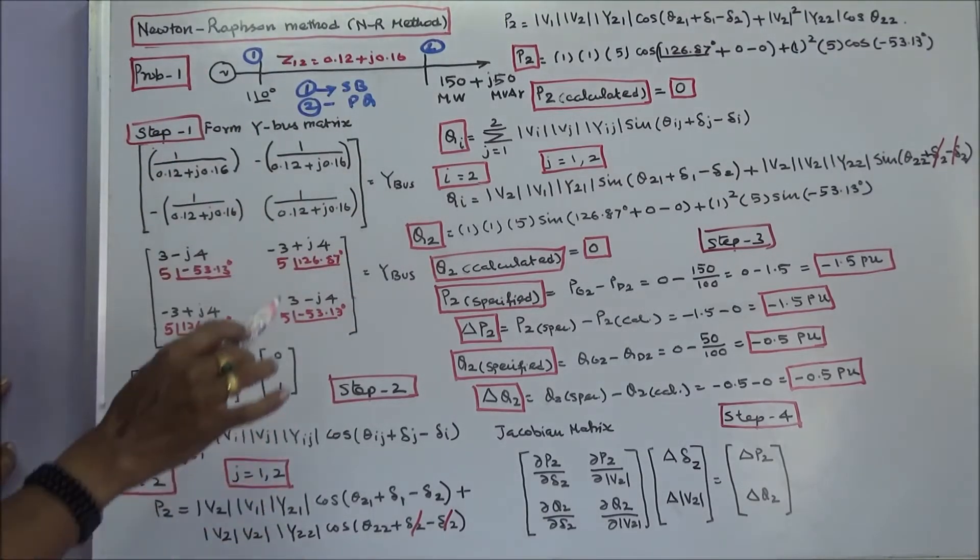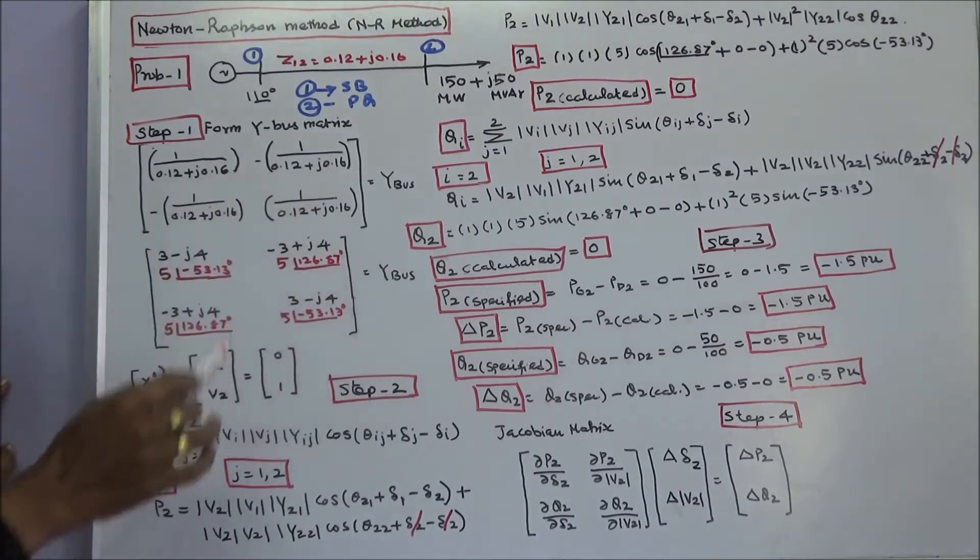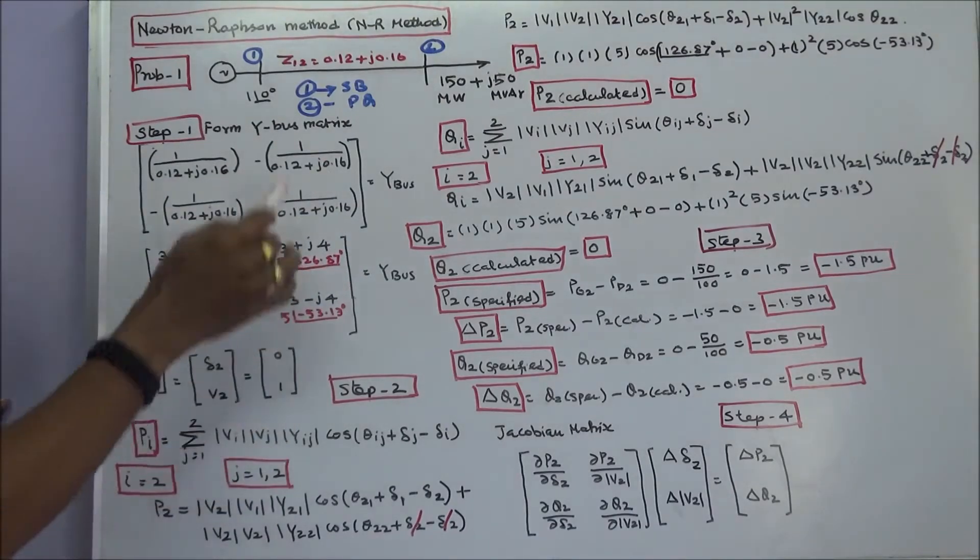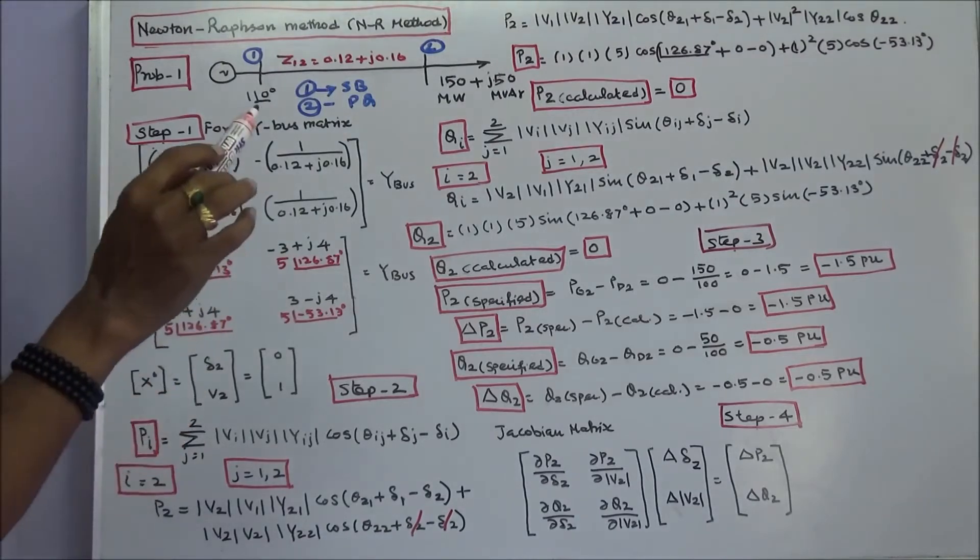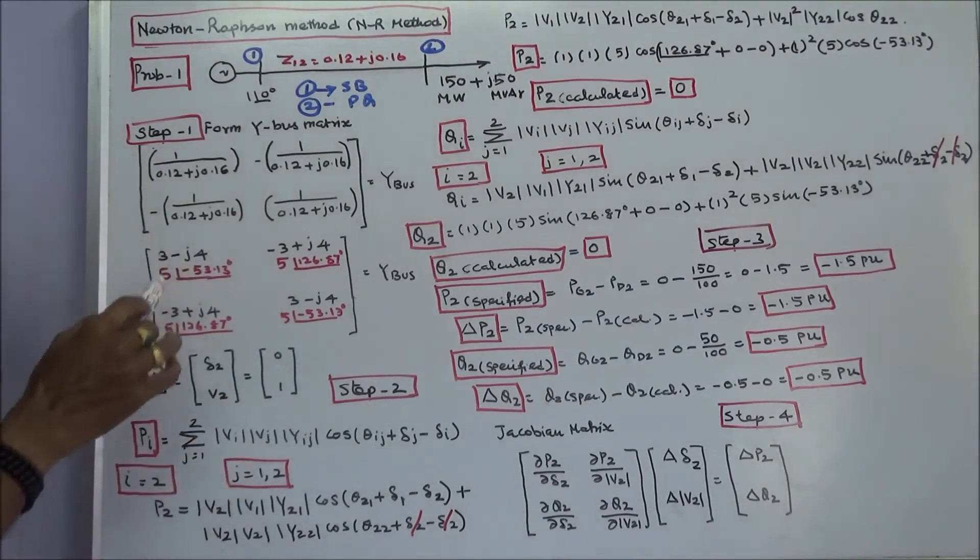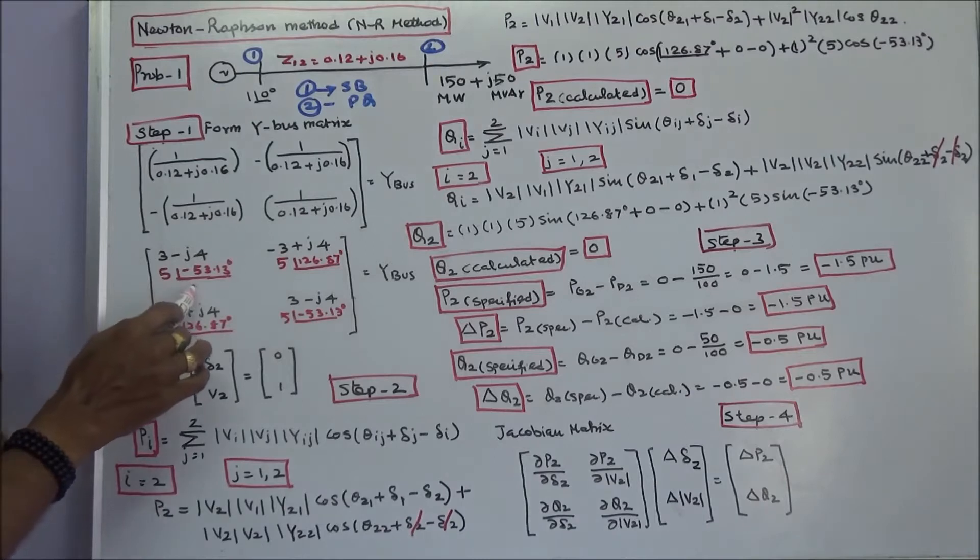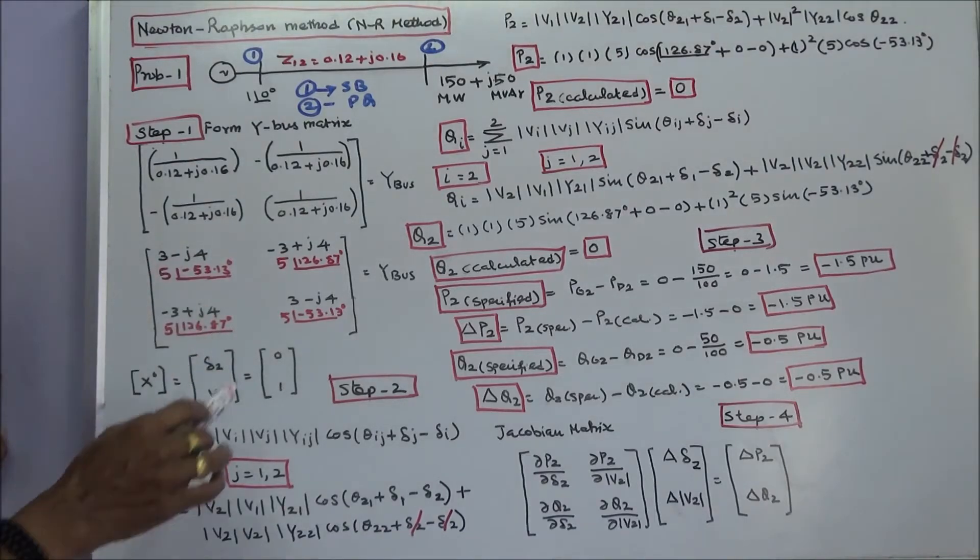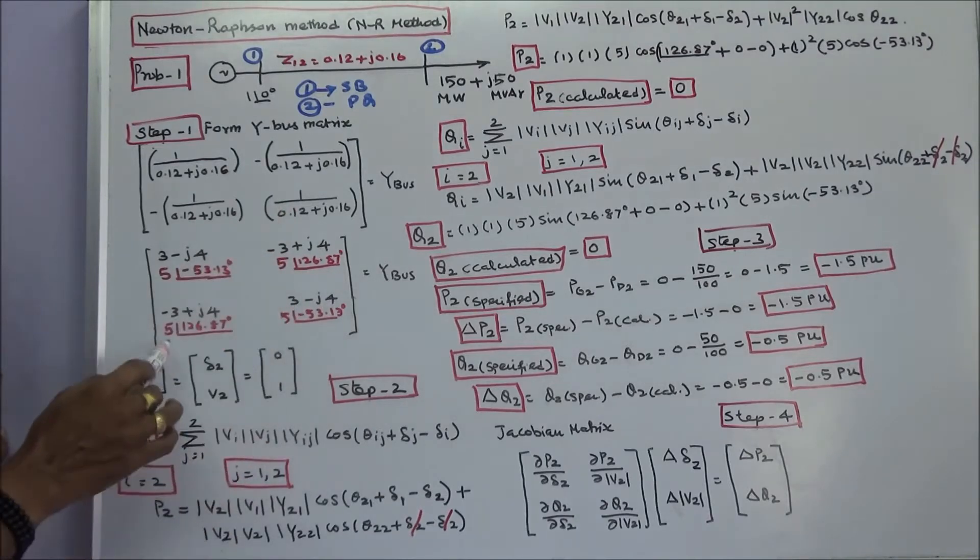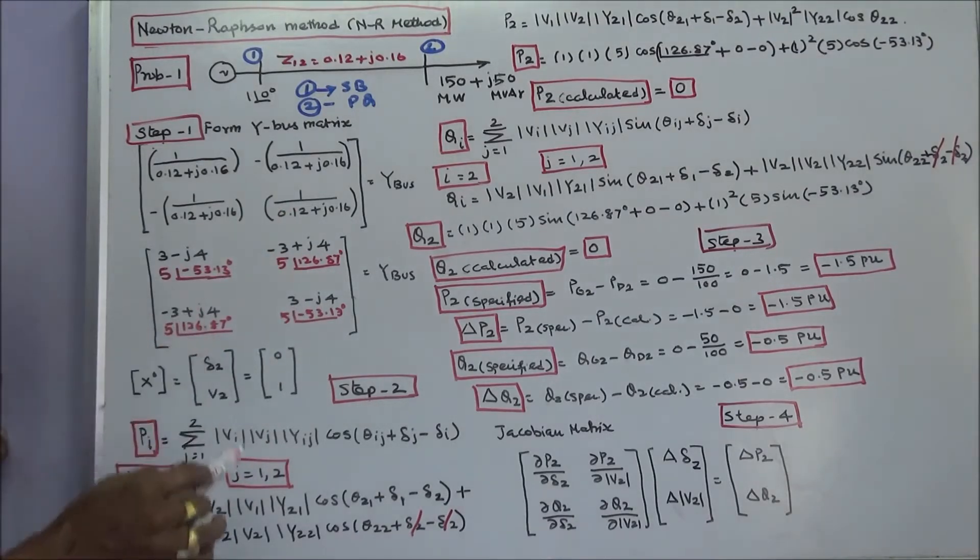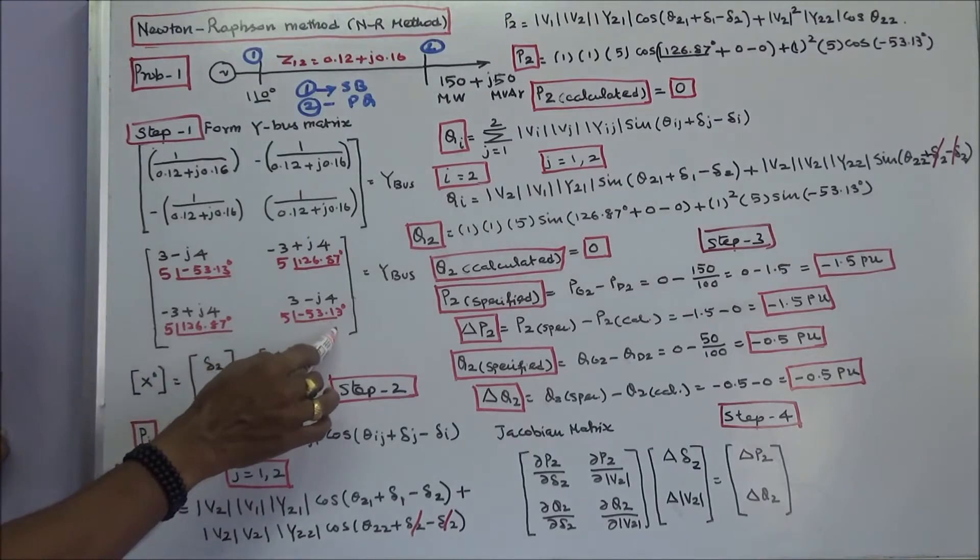First step: we have to form the Y-bus matrix. This is the Y-bus matrix of the system: 3 minus j4. This is in rectangular form. In polar form: 5∠-53.13°. This is 5∠126.87°. This is 5∠126.87°. This is 5∠-53.13 degrees.